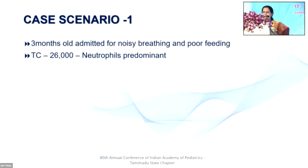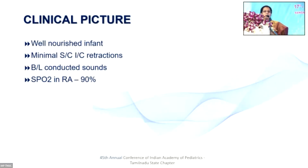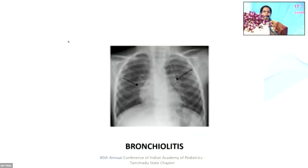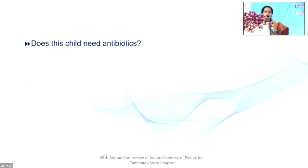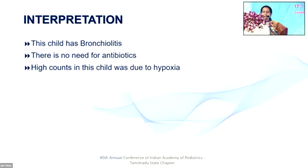Moving on to case scenario one: a three-month-old child admitted for noisy breathing and poor feeding, with a total count of 26,000, neutrophil predominant. Clinically, it's a well-nourished infant with minimal subcostal and intercostal retractions, bilateral conducted sounds, and saturation in room air of 90%. The X-ray shows peribronchial infiltrates. Does this child need antibiotics? This child has bronchiolitis. There is no need for antibiotics — the high counts were due to hypoxia.